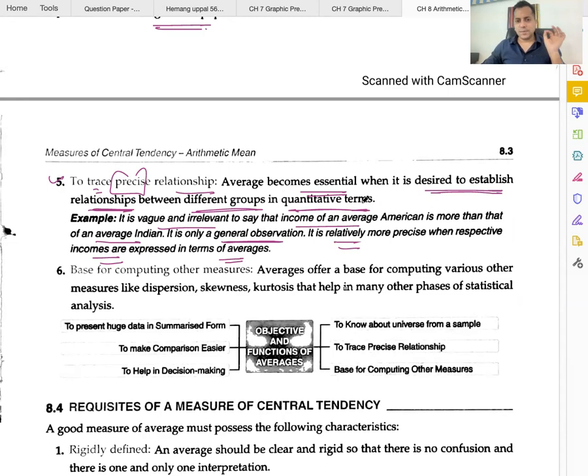Averages become essential when it is desired to establish relationships between different groups in quantitative terms.